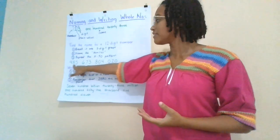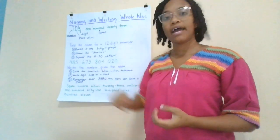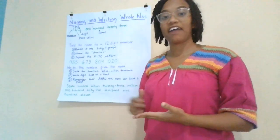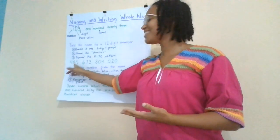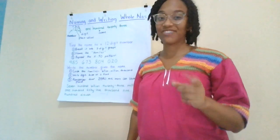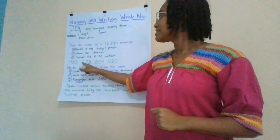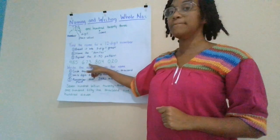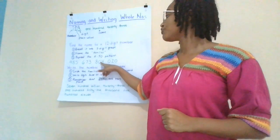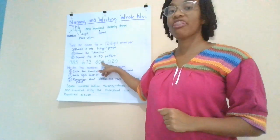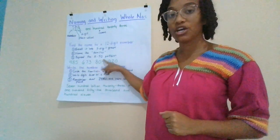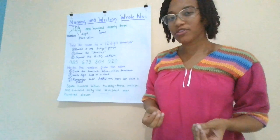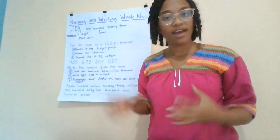Here I see 485, and I'm going to read that 485 billion. That's the billions family. 673 million, 804,020. Okay, be careful with those zeros — they can be tricky.